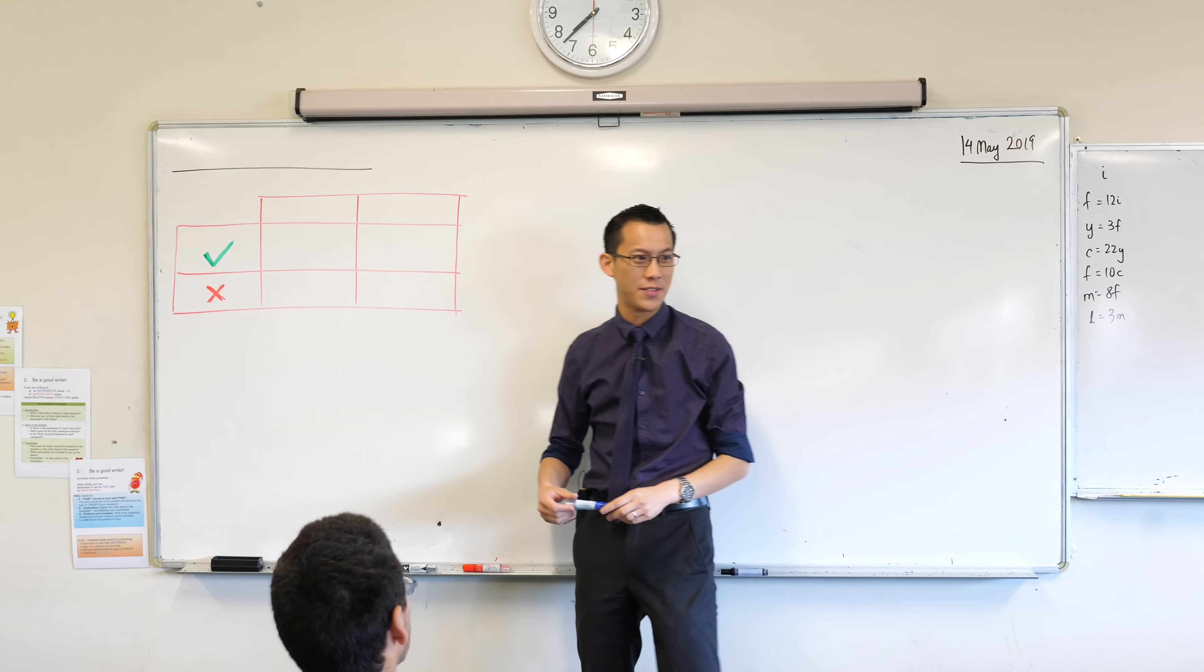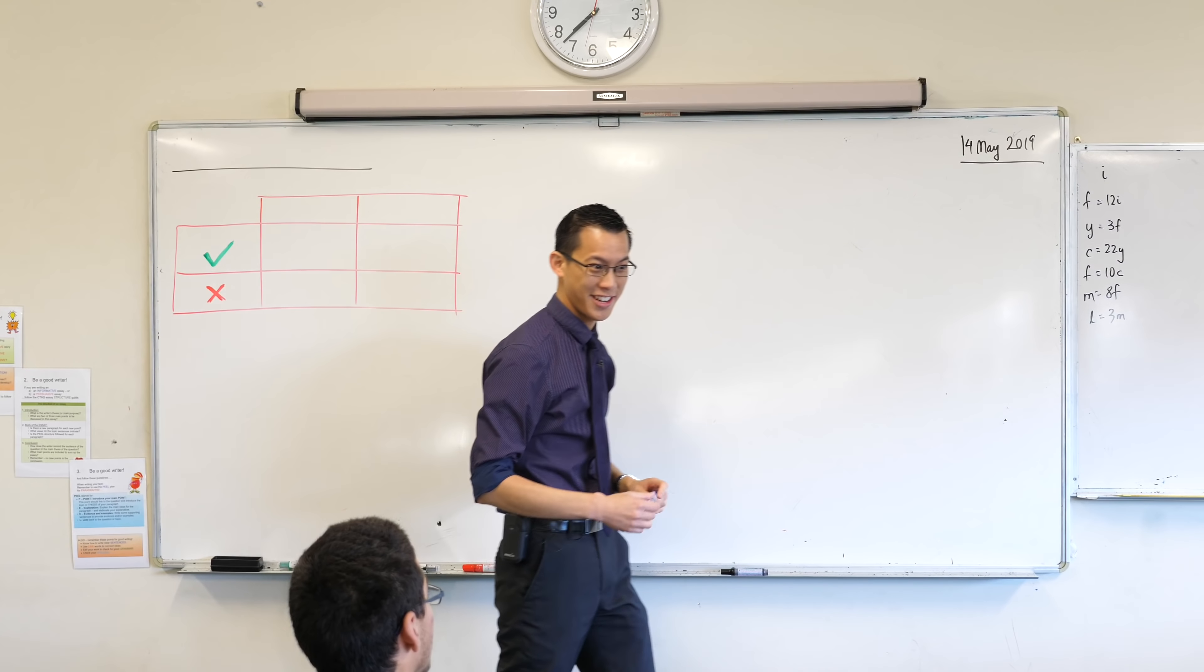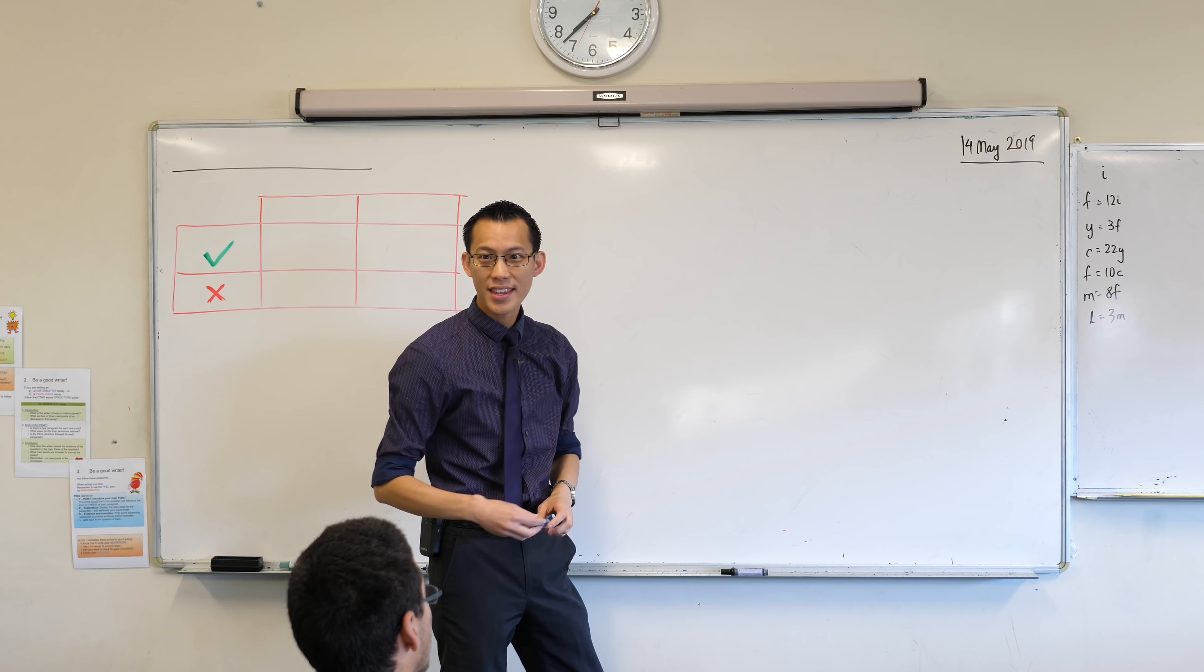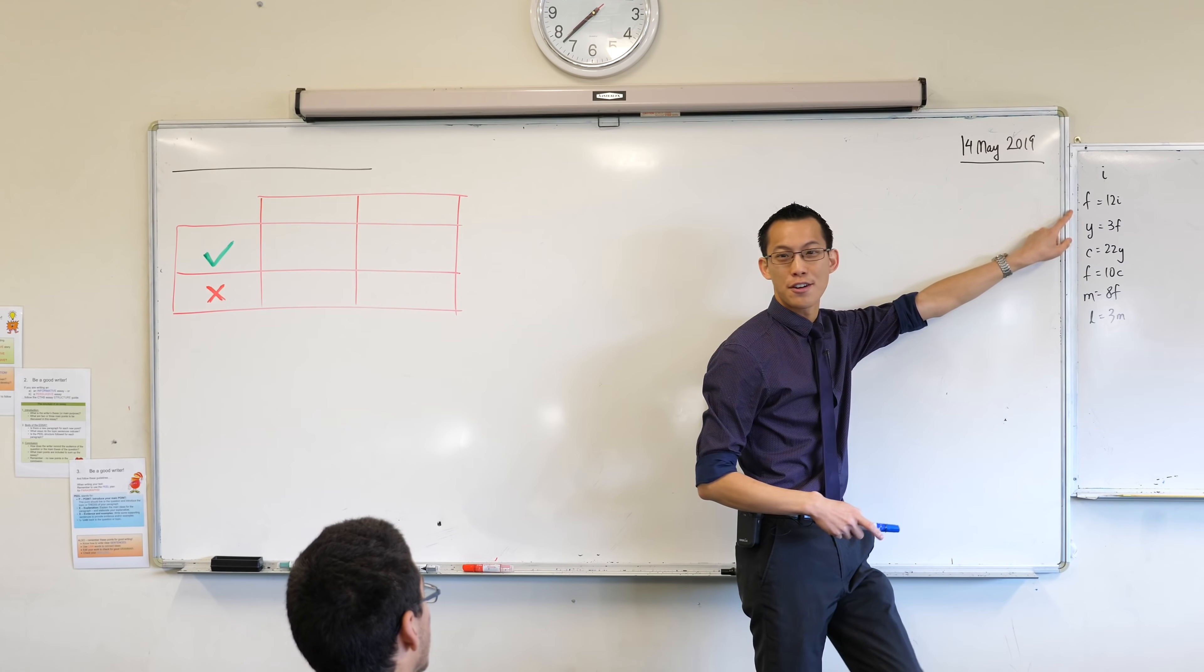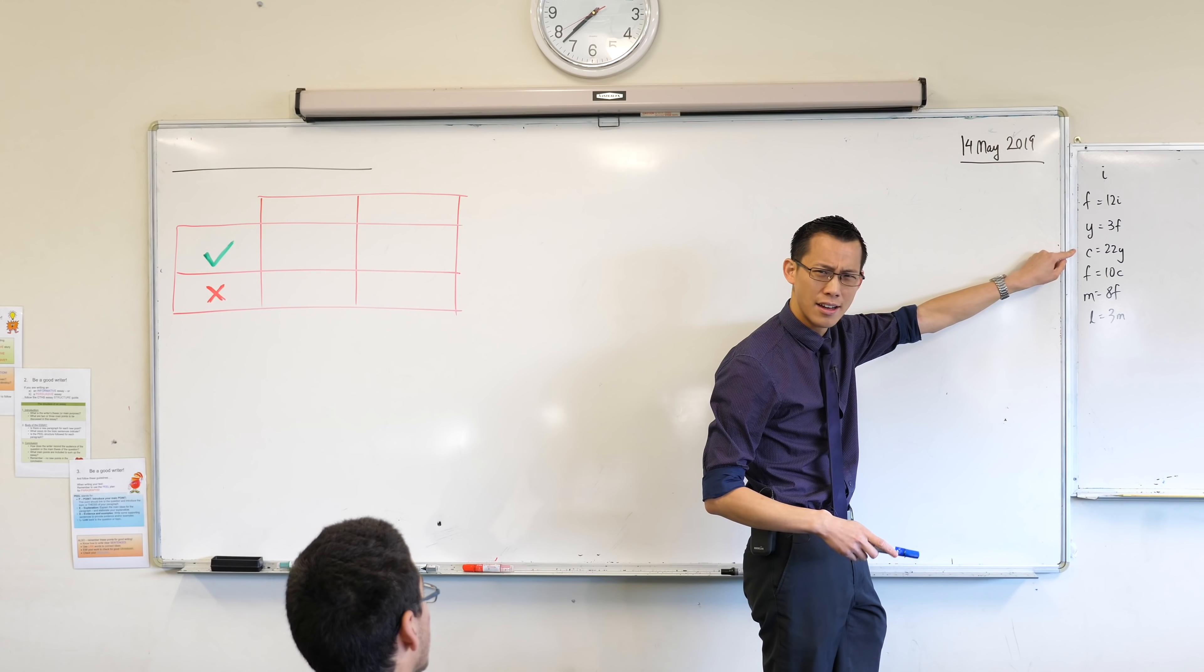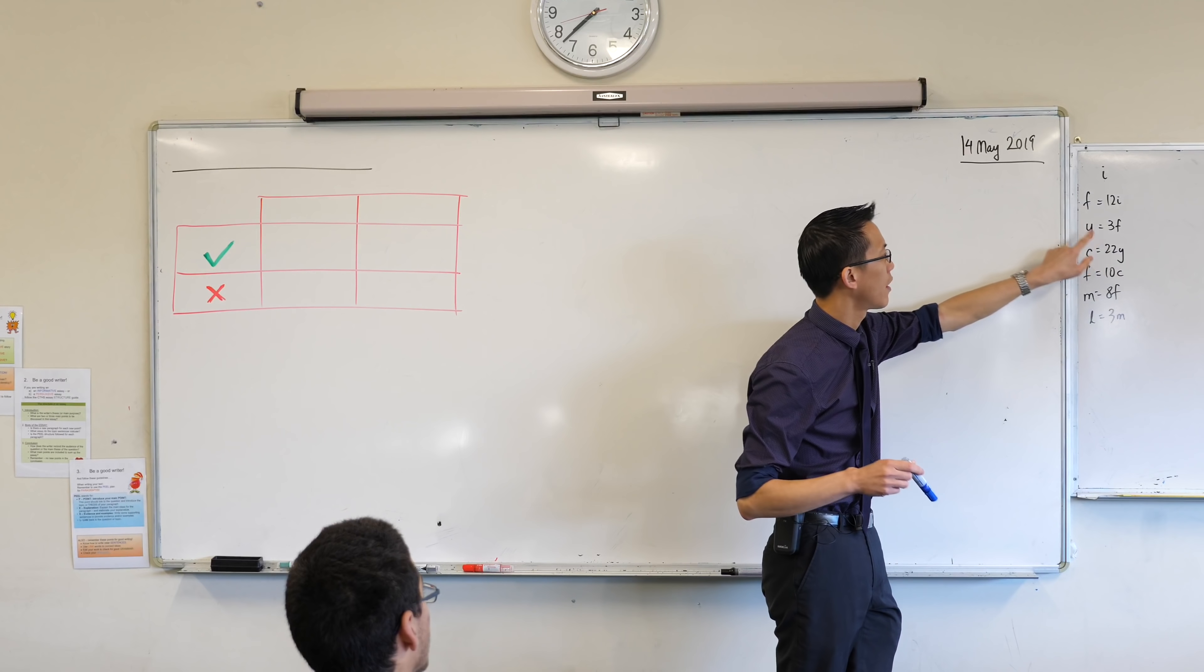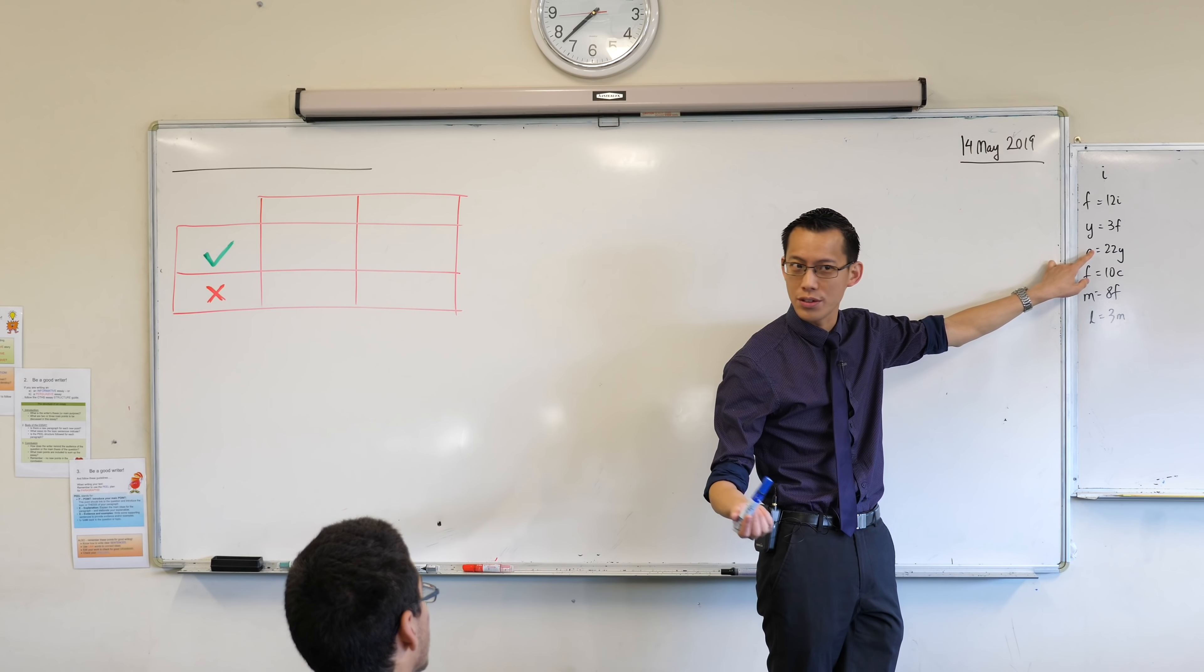Does anyone know what happens after a foot? It starts with a C. I didn't know either, I had to look it up. After a foot, it's a chain. A chain is 22, sorry after a yard. A chain is 22 yards.